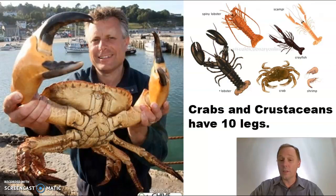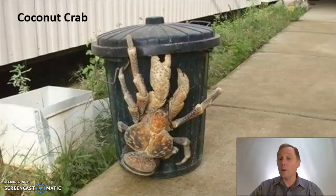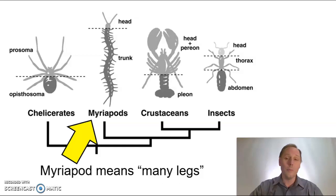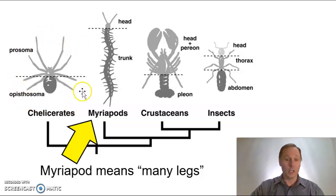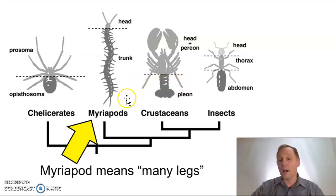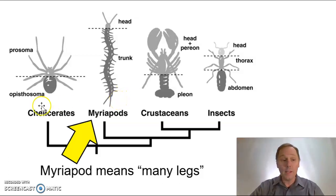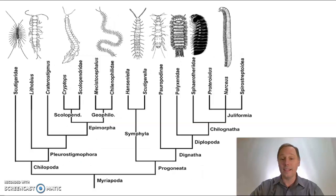Crabs and crustaceans want to join in the fun — they have 10 legs, but they're not considered bugs. Although the coconut crab is creepy enough to be in this slideshow, so I'll let it slide. So today we've talked about insects with their six legs, spiders and arachnids with their eight legs, and crustaceans with their 10 legs. Now I want to take it up to the next level — we're getting into myriapods. Myriapod means many legs, and this group is very complex. Let's break it into two main groups: millipedes and centipedes.